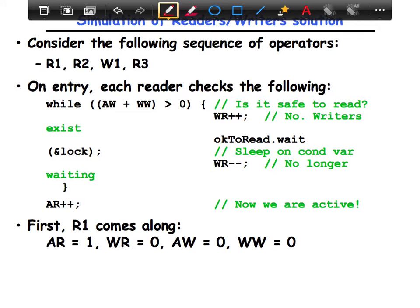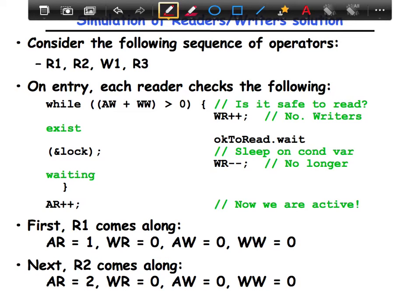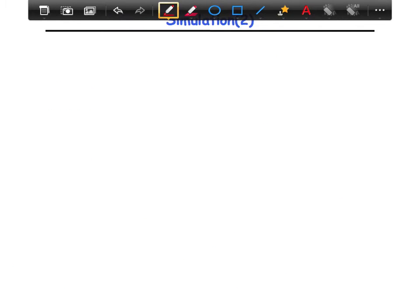Note that the other variables are all zero. Next one comes along, similar. He also gets through the system clean, increments the active readers, and moves along to access the database.